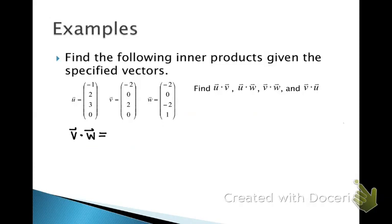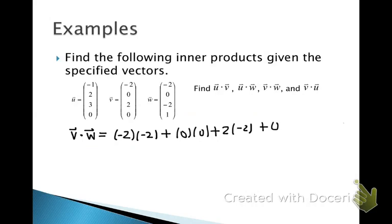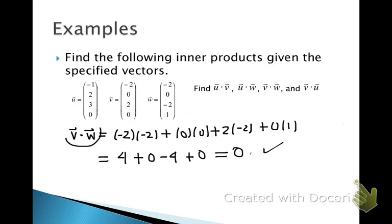Now that we know how to find the inner product, we no longer need to do the transpose. All we need to do is simply multiply the first elements together and add that to the second elements multiplied together, etc. So if we do the inner product of v with w, it's negative 2 times negative 2, plus 0 times 0, plus 2 times negative 2, plus 0 times 1, giving us 4 plus 0 minus 4 plus 0, and our final result is 0. The inner product of v with w equals 0, and we'll find later that this has special meaning.